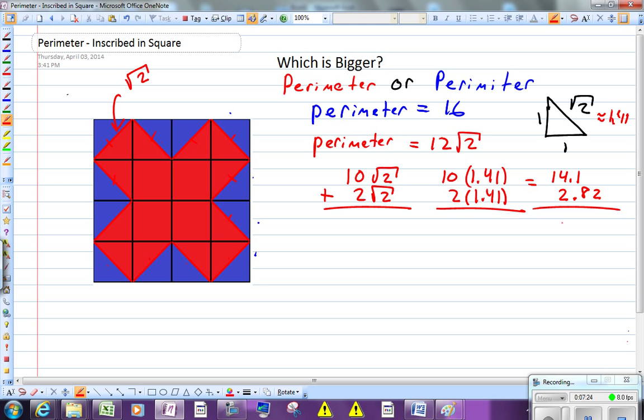So 14 plus 2 gives you 16, 0.1 plus 0.8 is 0.92. The red is 16.92. So indeed, we have proven to ourselves that the red is indeed bigger than the blue.